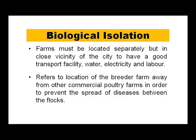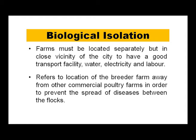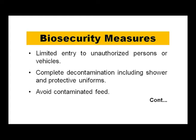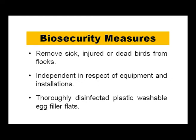For biological isolation, the farm must be located separately but in close vicinity to the city to allow good transport, water, electricity, and labor access. The breeder farm should be located away from other commercial poultry farms to prevent the spread of disease between flocks. Regular blood testing for vertically transmitted diseases such as pullorum, paratyphoid, chronic CRD, and infectious synovitis is required. Biosecurity measures include limited entry for unauthorized persons, complete decontamination including shower baths, protective uniforms, avoiding contaminated feed, removal of sick or dead birds, thorough disinfection of equipment, and use of plastic washable egg filler flats.